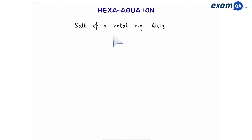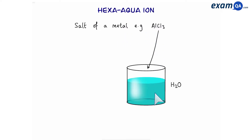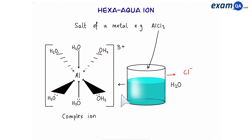Imagine this: you have a salt of a metal, let's say aluminium chloride. You place this in a beaker of water. This breaks down into aluminium ions and chloride ions. Next, the water molecules will surround the aluminium like so, creating a complex ion in which the water molecules are bonded as ligands to the central metal ion — in this case, aluminium. It's not going to be all of the water molecules; there's still going to be lots of water floating around freely in the beaker. The complex ion can also be written as aluminium with six waters and then three plus.